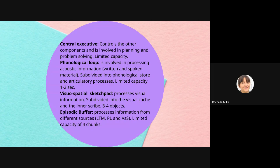If you're doing a diagram of the model to describe the working memory model, you also need to include the different parts and what they do, and you need to include the coding and capacity of them. For the phonological loop, the coding is acoustic. For the visuospatial sketchpad, the coding is visual information. The phonological loop has a limited capacity of whatever you can say in two seconds, and the visuospatial sketchpad has a capacity of three to four objects. Make sure you include that information when you are outlining or describing the working memory model.